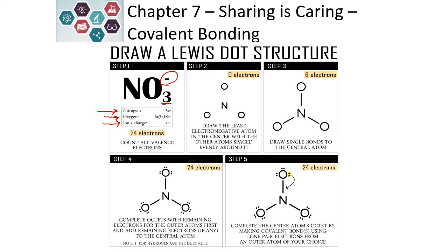We count up the number of electrons it takes to draw those single bonds. In this case, because there are 3 oxygens, it's going to take 3 bonds, which is 6 electrons. We subtract those electrons from our total.